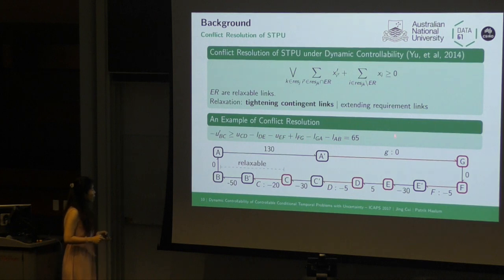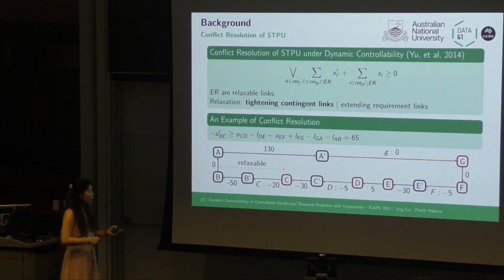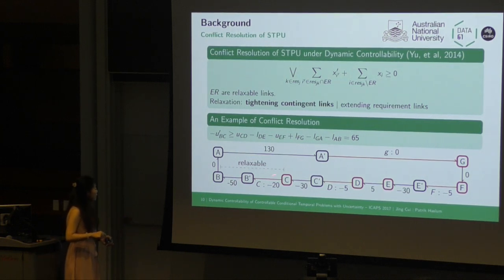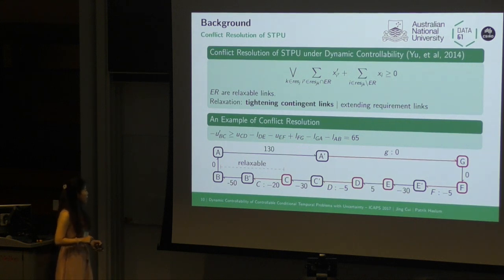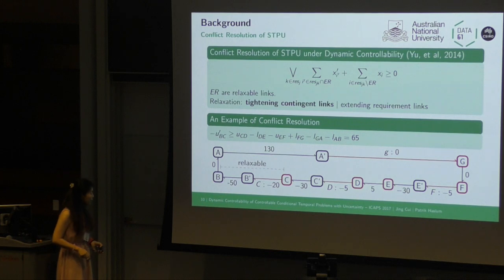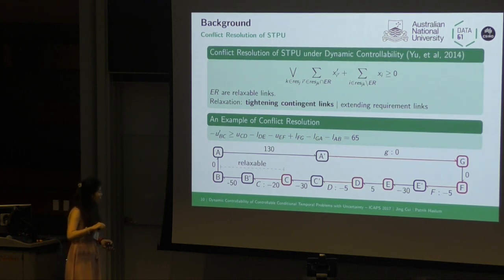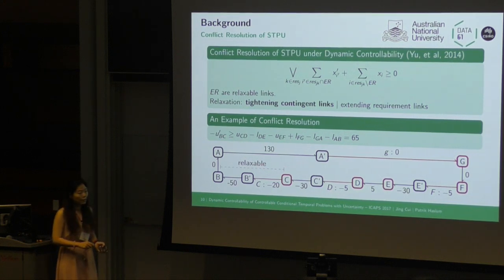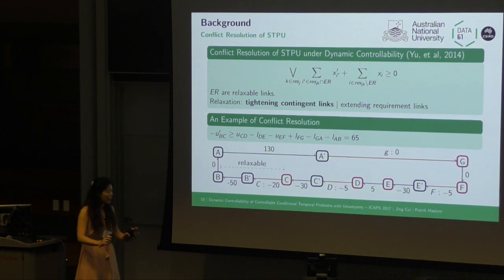This is the example of conflict resolution. Within the negative cycle already found by the Morris cubic algorithm, if link BC is relaxable, then the conflict resolution states that the negative upper bound must be greater than the sum of the rest of the links, which is 65. So if the upper bound of this link is smaller than 65, this conflict does not exist at all.